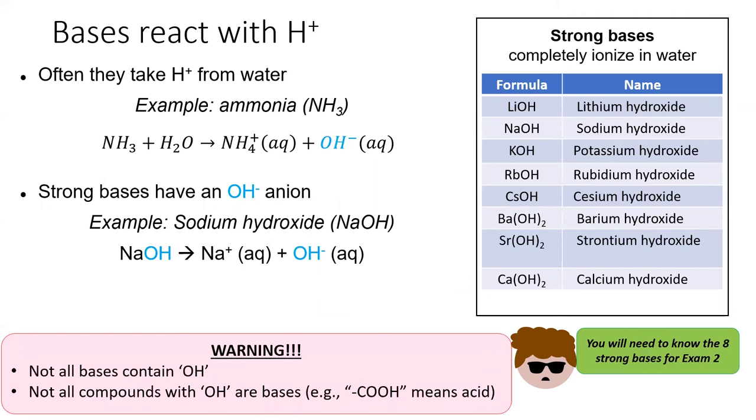Keep in mind two things about bases. Not all bases contain an OH anion. The example ammonia above does not, and we'll see another example later on. Also, not everything with an OH in the formula is a base. Things with a COOH in the formula are carboxylic acids. Additionally, alcohols have an OH in their formula, but alcohols are neither basic nor acidic.